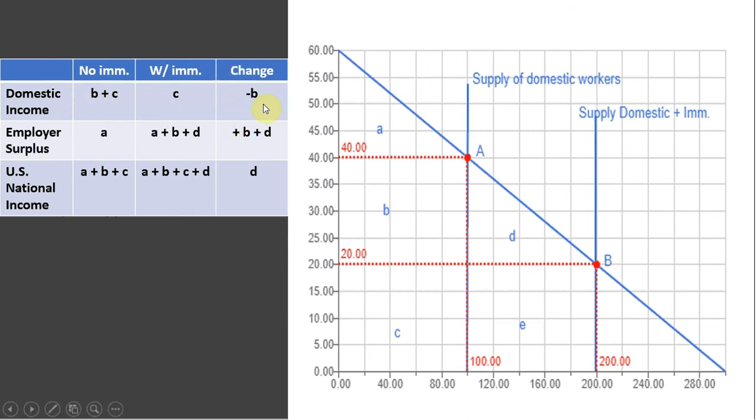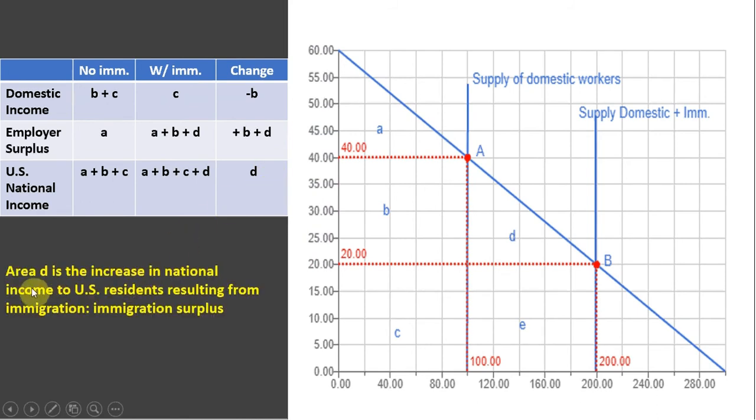Area D will represent the increase in income, increase in income to U.S. national income as a result of immigration. So workers lose, employers gain. And notice the gain to employers outweighs the loss to workers. This minus B gets pocketed by employers. So that's a wash, and then you're just left with area D. Again, area D is immigration surplus. So summing up here, area D is the increase in national income to U.S. residents resulting from immigration, or the so-called immigration surplus.